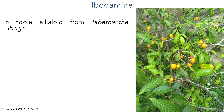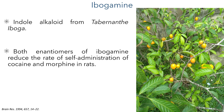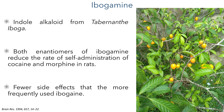Ibogamine is an indole alkaloid isolated from the African shrub Tabernanthe iboga. This shrub is a source of many psychoactive compounds, and both enantiomers of ibogamine have been shown to reduce the rate of self-administration of cocaine and morphine in rats, suggesting they may have use in controlling addiction and reducing withdrawal symptoms. This activity is similar to the more common ibogaine, also isolated from this plant. However, ibogaine can have very serious side effects, while ibogamine is much better tolerated.